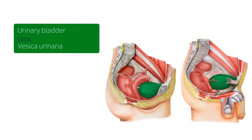In the image of the female we can see the bladder, the uterus, the ovaries, and the rectum. On our male model we can see our bladder in green, the seminal ducts, and the rectum.